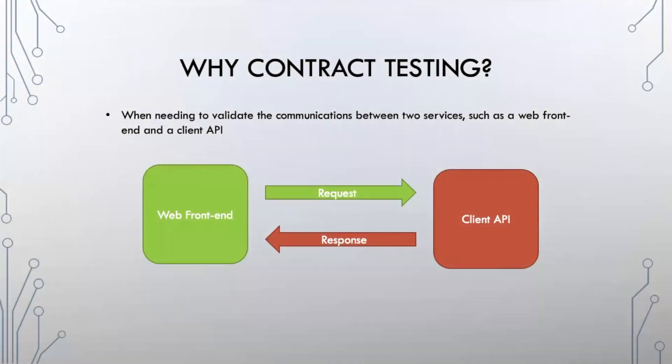First thing we're going to talk about is why we would use contract testing. Contract testing fits in where we're needing to validate communications between two services, such as a web front end and a client API. In a normal situation with API testing, we have a web front end that's sending a request to a client API, and that client API responds with the data that the web front end requested.